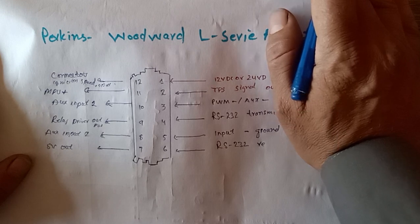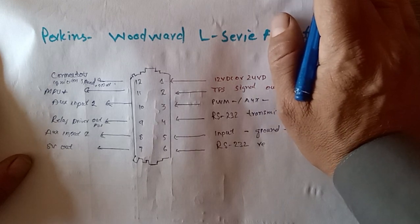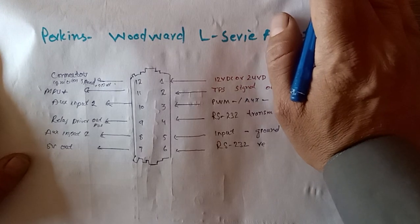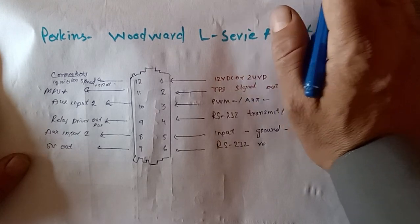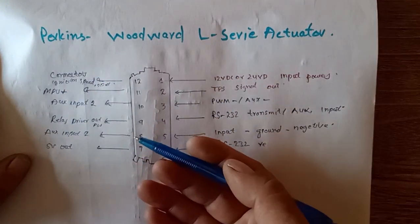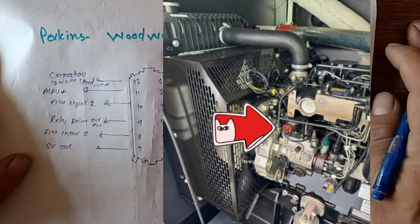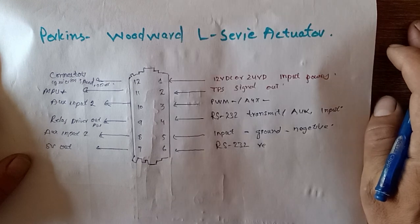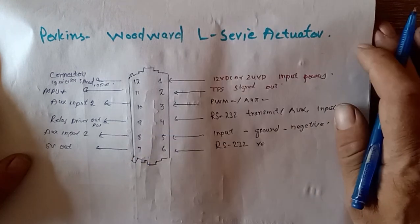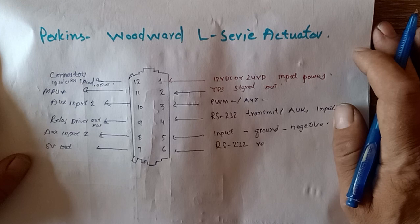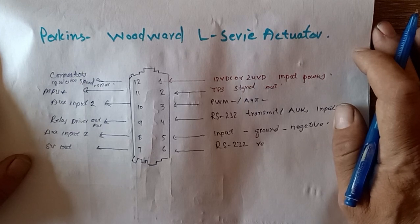So let's get started. This type of actuators mostly come in Perkins generators from 60 kVA to 110 kVA and then finally to 250 kVA.